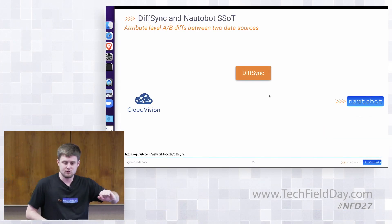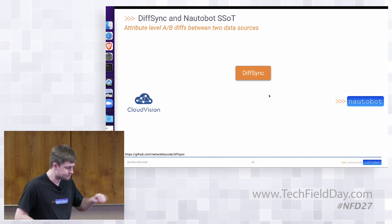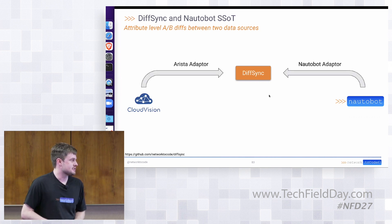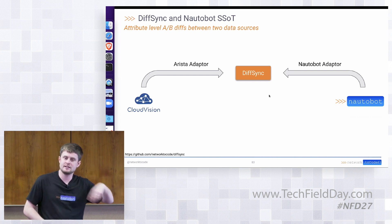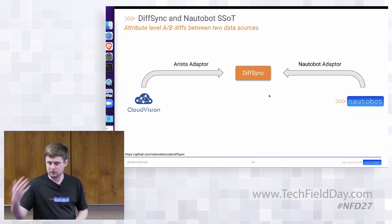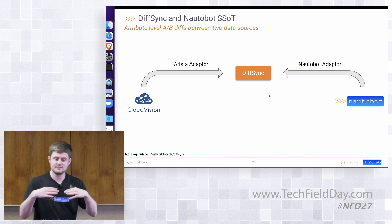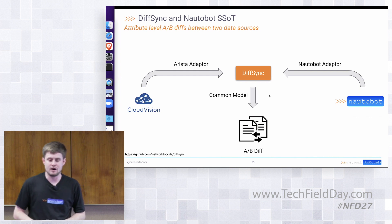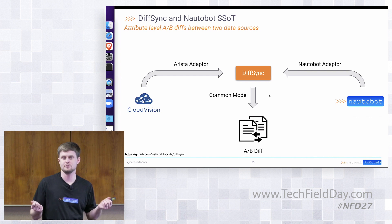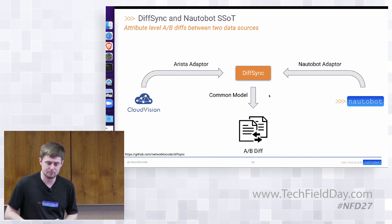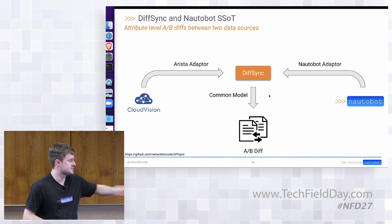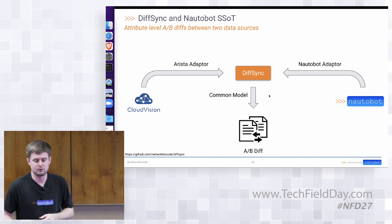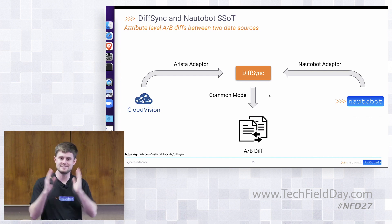Let's say we want to create an integration with Arista Cloud Vision for onboarding devices. We have two adapters: a Nautobot adapter and an Arista adapter. The Arista adapter hits the Cloud Vision API to get all known devices, while the Nautobot adapter retrieves all devices defined in Nautobot. That data gets fed into DiffSync, which uses an internal common model — implemented via Pydantic data models in Python — representing what's common for that data domain between the two systems. Because we're using a common model, we have two versions of the dataset and can produce a diff at the attribute level.